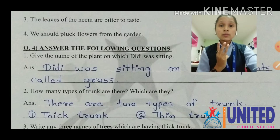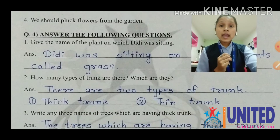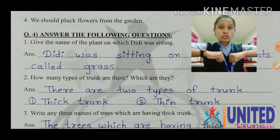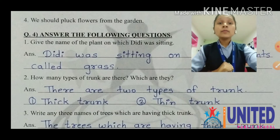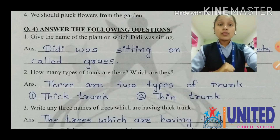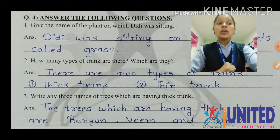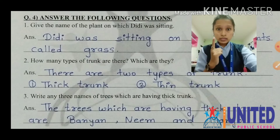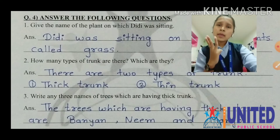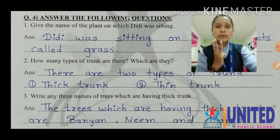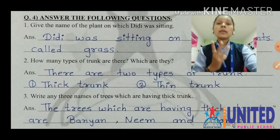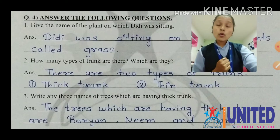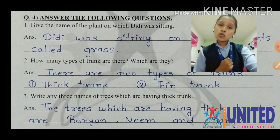Number three: write any three names of trees which have a thick trunk. The trees with thick trunks are banyan, neem, and mango. Banyan spelling is B-A-N-Y-A-N. Then neem, N-E-E-M. And mango, M-A-N-G-O.